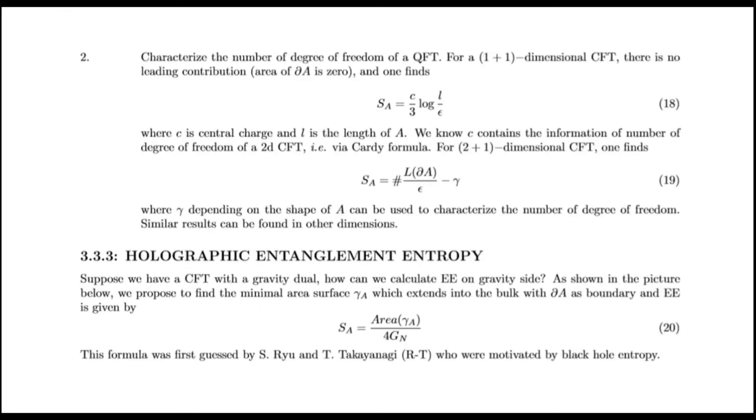To characterize the number of degrees of freedom of a conformal field theory, for a 1 plus 1 dimensional CFT, there is no leading contribution, and one finds this, where C is central charge and L is the length of A. We know C contains the information of the number of degrees of freedom of a 2 dimensional CFT via Cardy formula. For 2 plus 1 dimensional CFT, one finds this, where γ, depending on the shape of A, can be used to characterize the number of degrees of freedom.